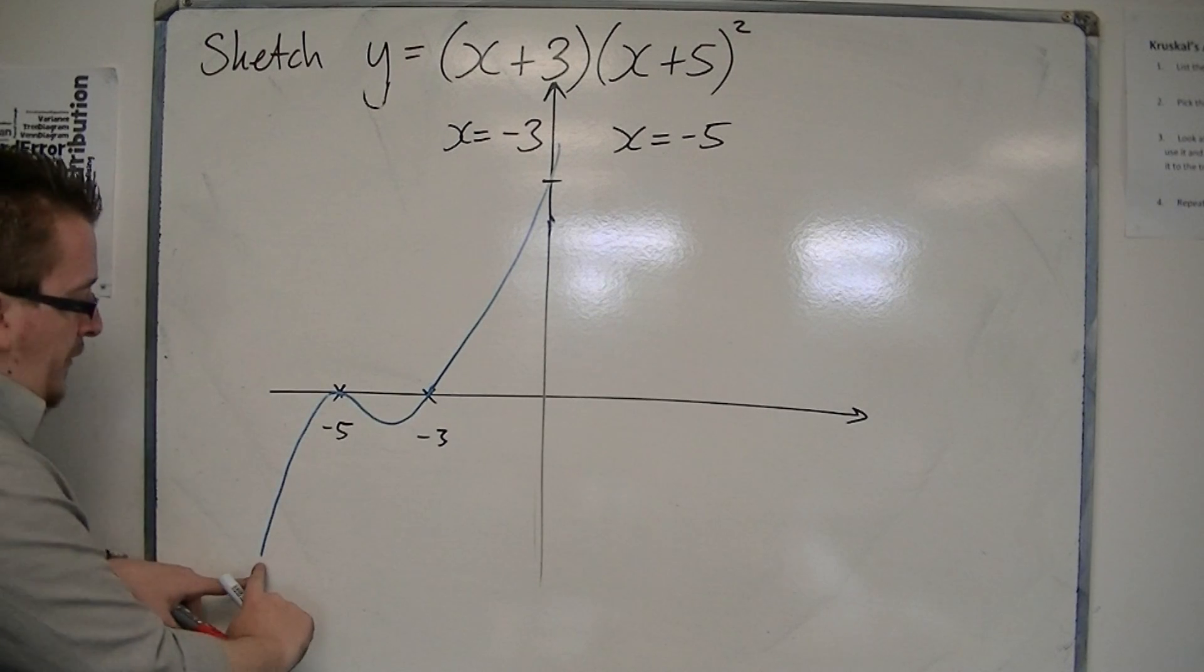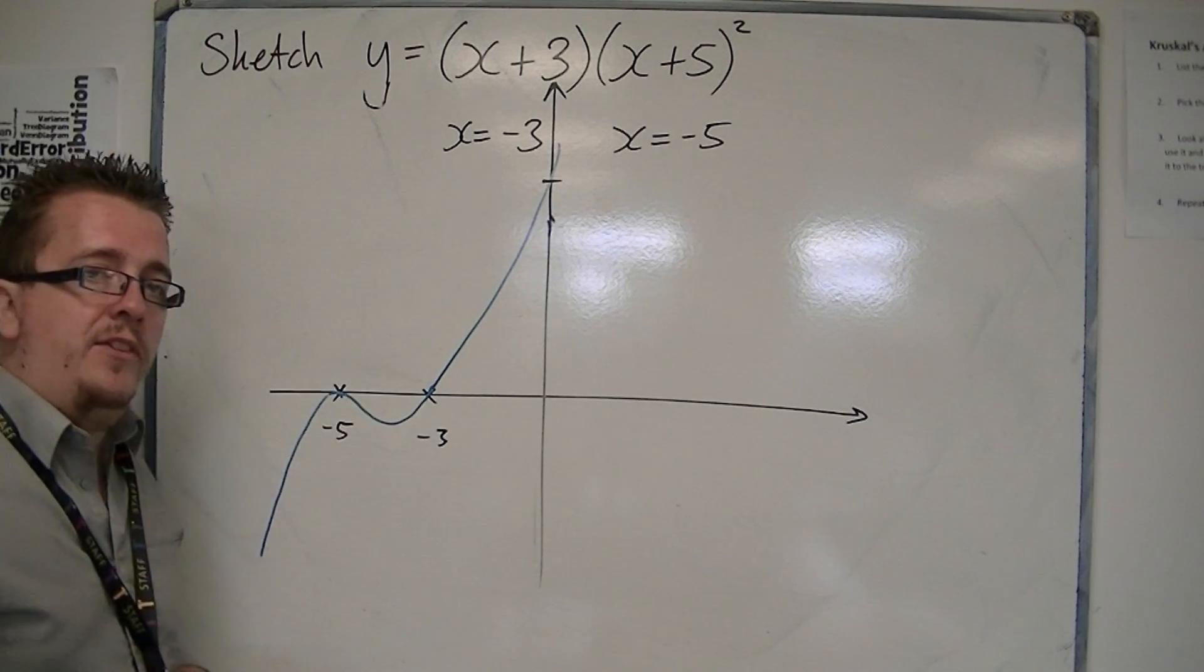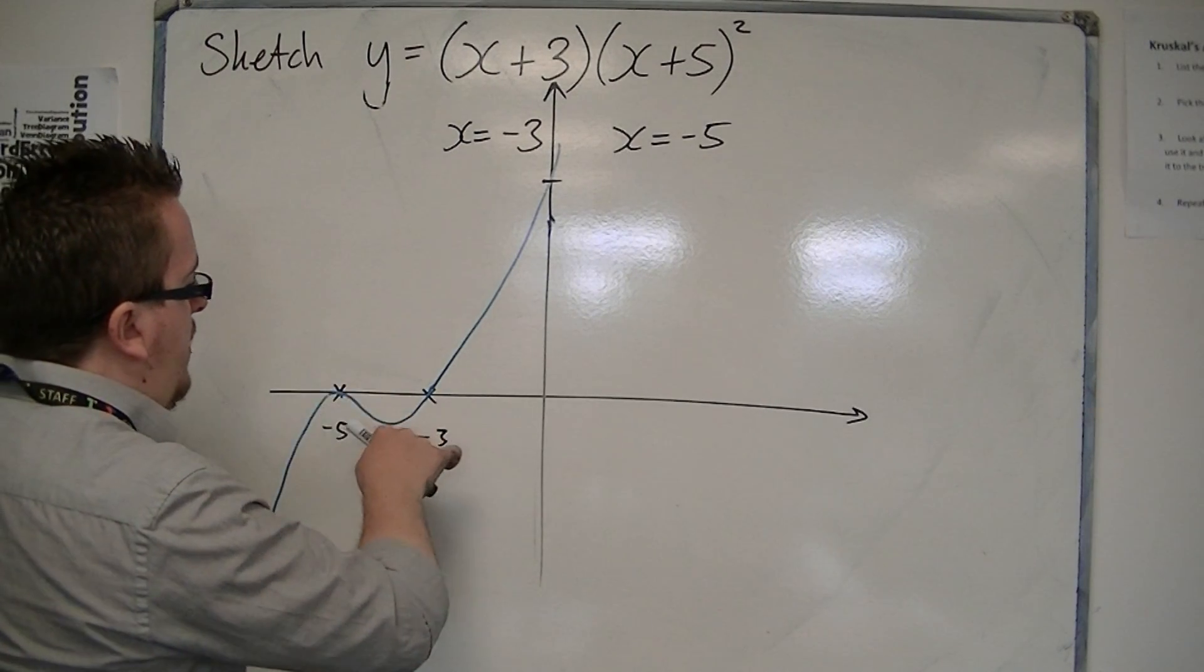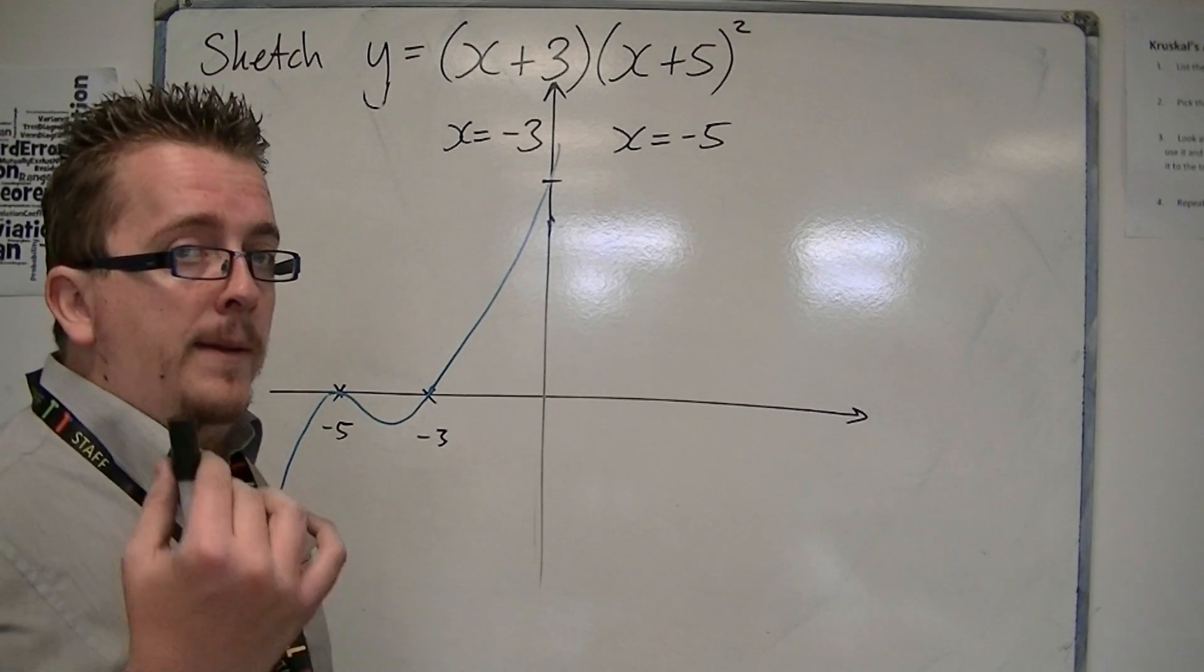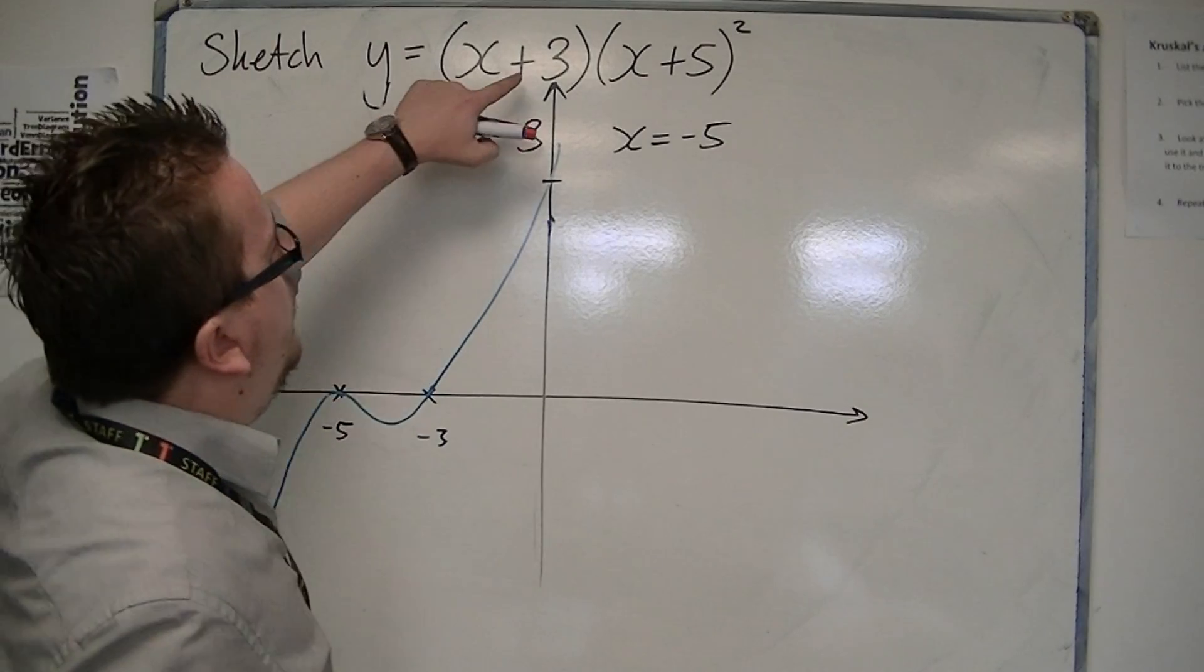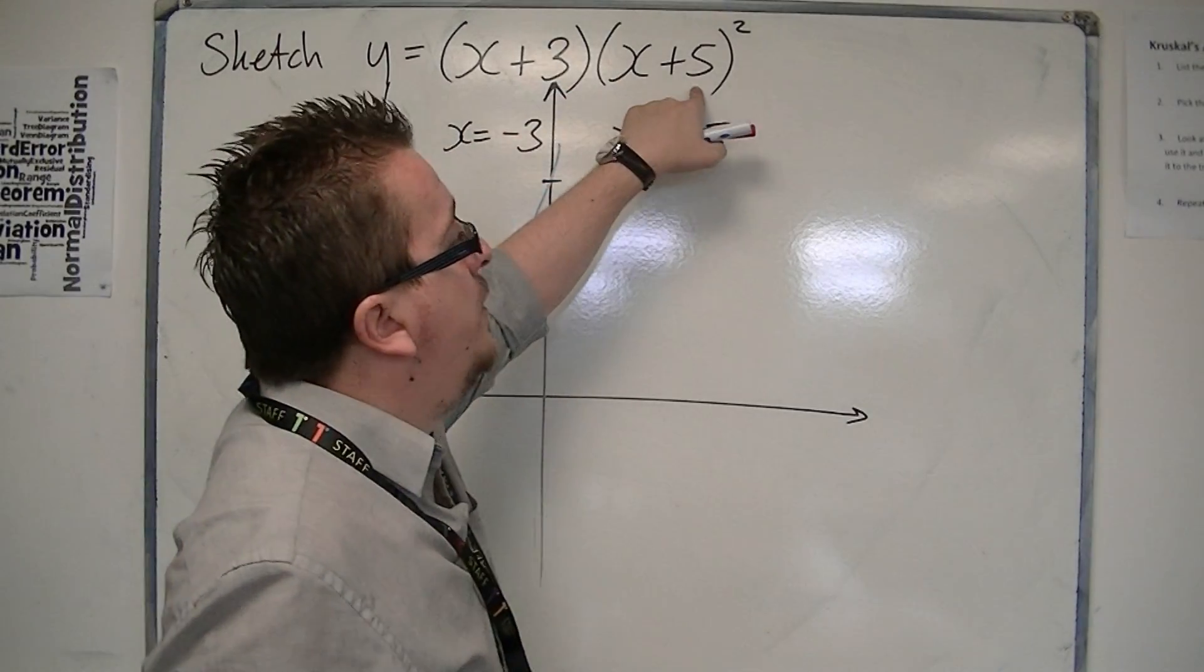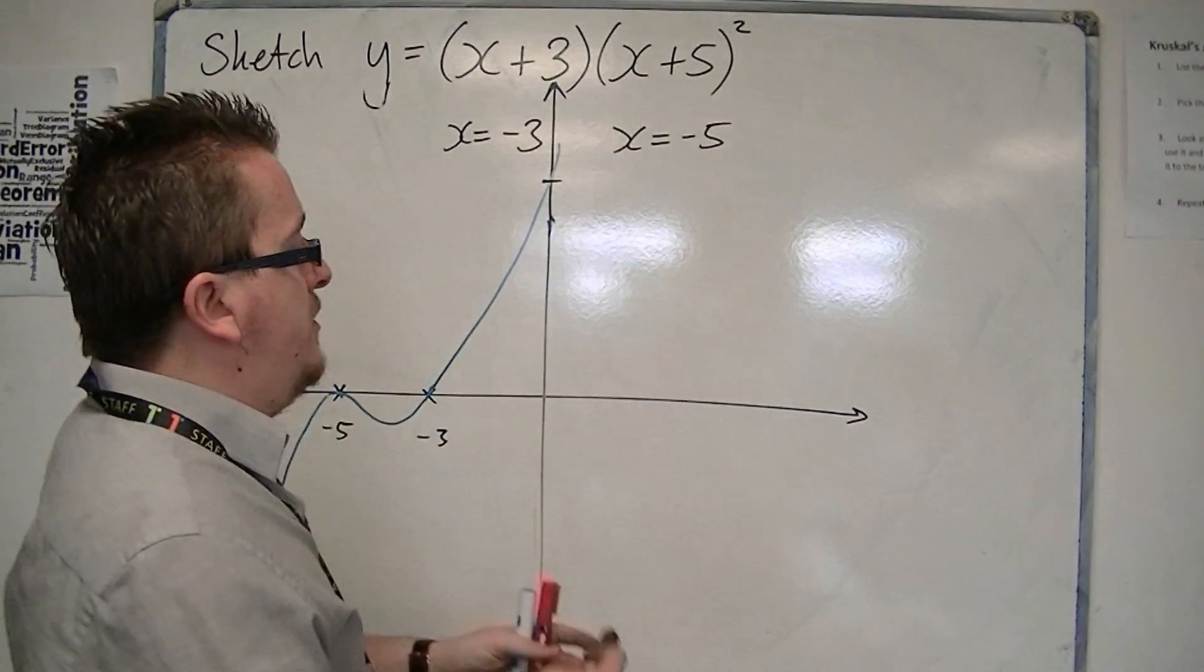So, in doing so, it just touches the x-axis at that point, then comes back on itself to cross at minus 3. So, it's crossing the y-axis at 3 times 5 times 5, so that's 75.